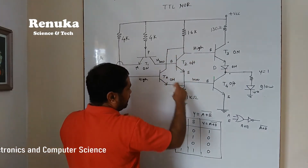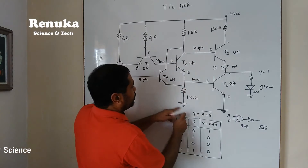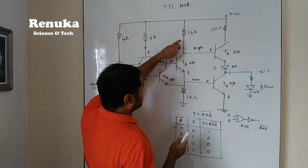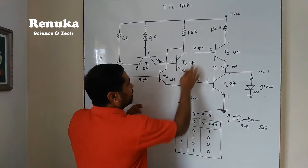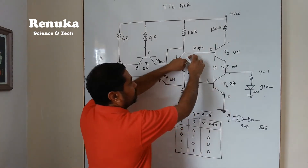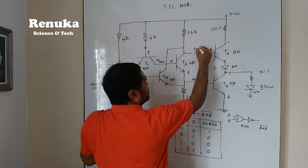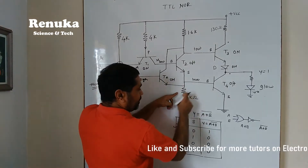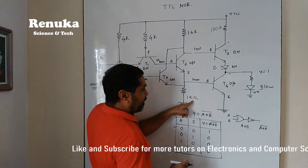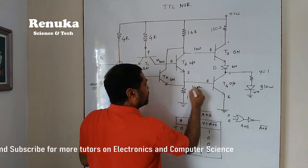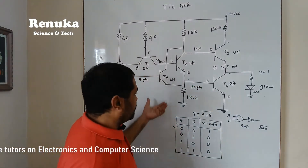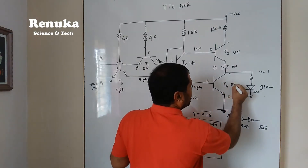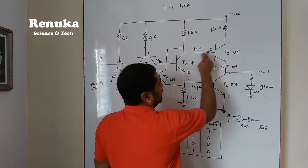From the two parallel connections, there is still a path to conduct current towards ground. If one path is off, another path is on, so all current still sinks to ground. This means there will be no voltage drop at this point, creating low voltage at the base of T3. However, current flowing through the 1kΩ resistor creates a voltage drop considered as high voltage at the base of T4. So T4 is ON (high input) and T3 is OFF (low input).